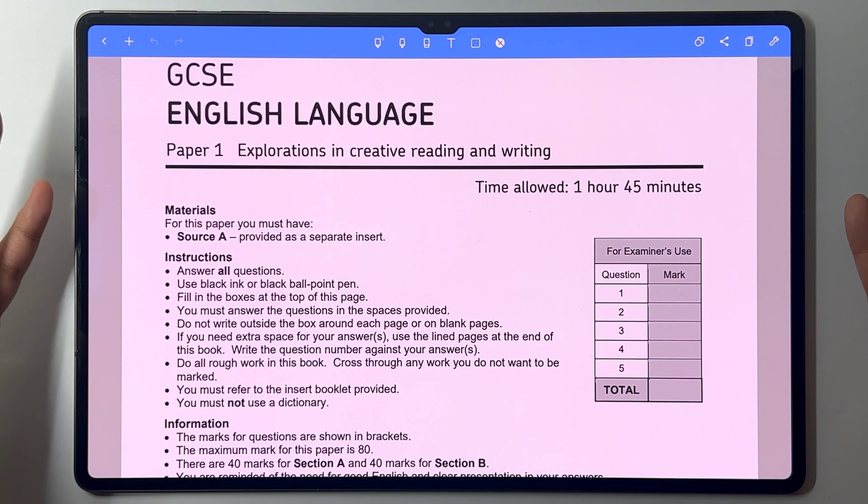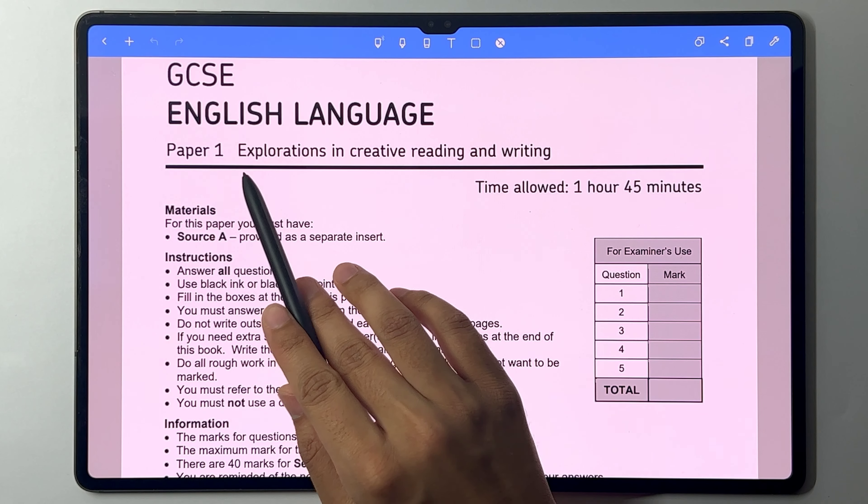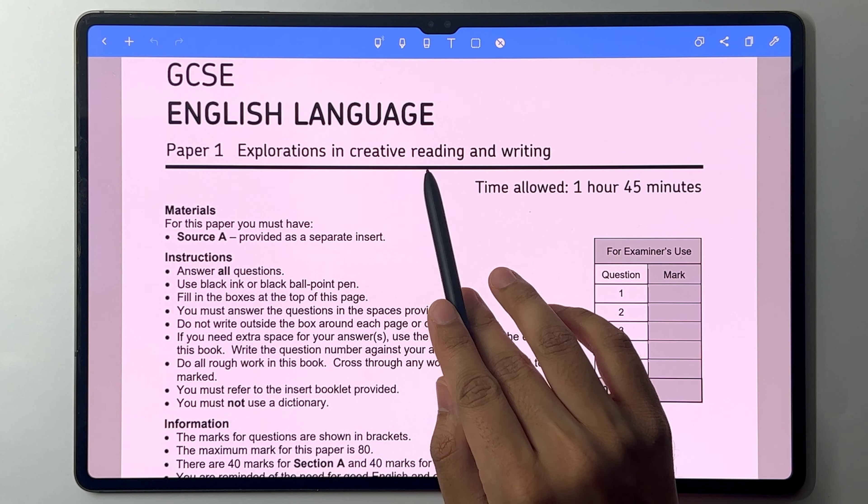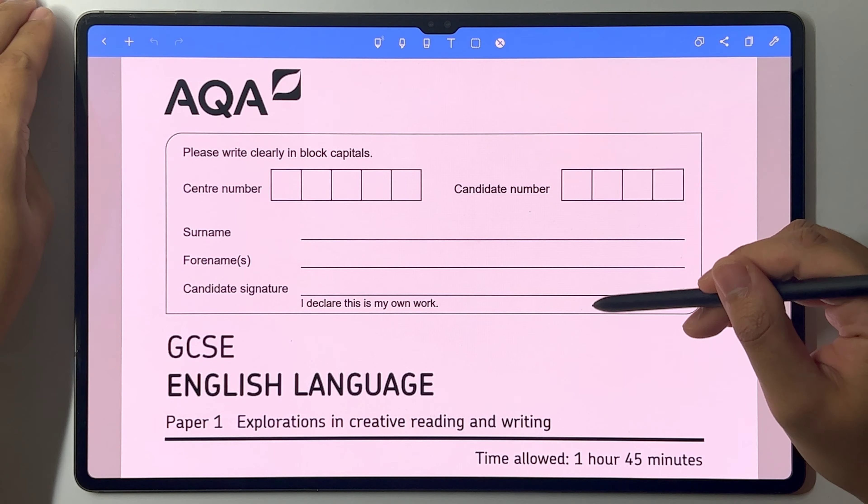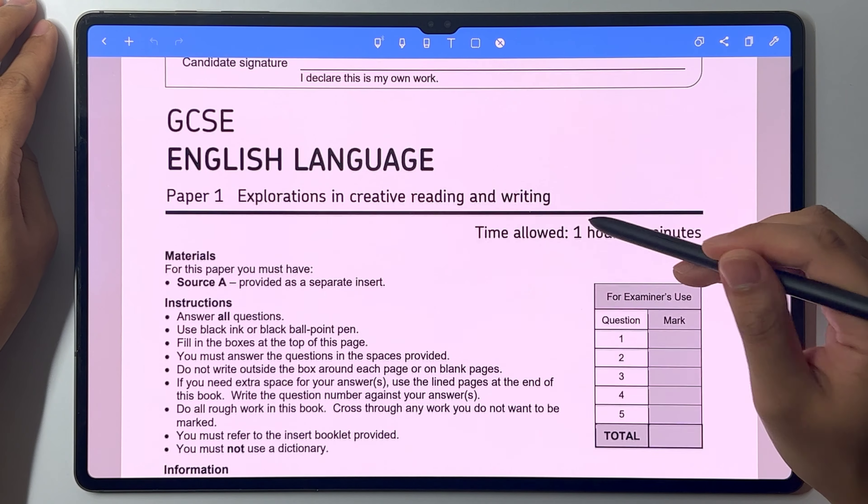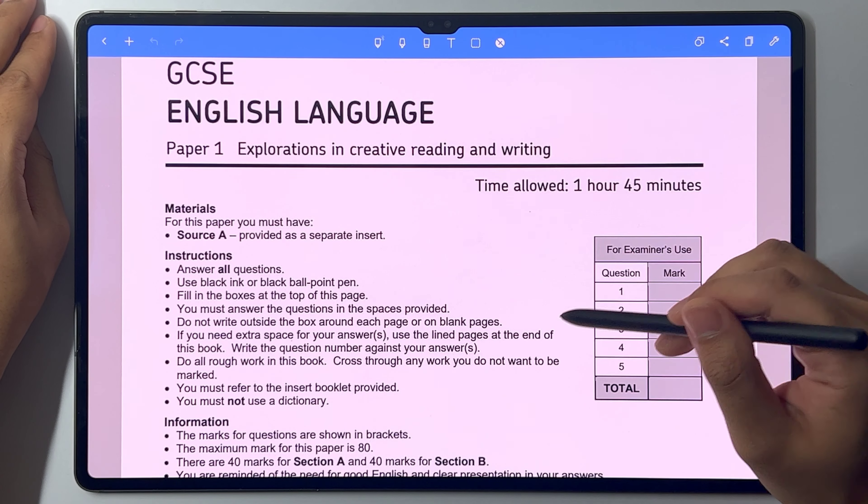Hello everyone, welcome back to another GCSE English language video. Today we are looking at Paper 1, Explorations in Creative Reading and Writing, and this is for the AQA exam board.